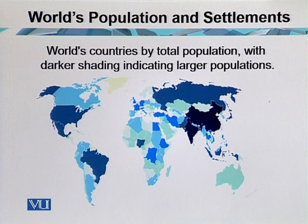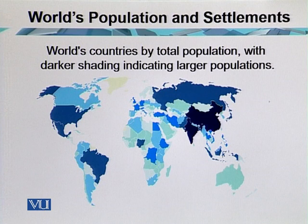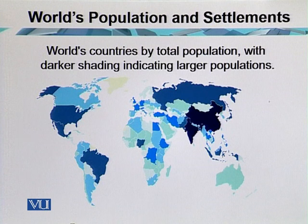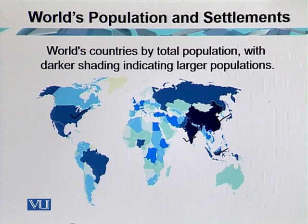This slide shows the world countries by total population, with the darker shade indicating the larger population. The major clusters of human population belong to the developing world — those are East Asian nations, South Asia, South East Asia, North America, and some areas of Europe and South America.